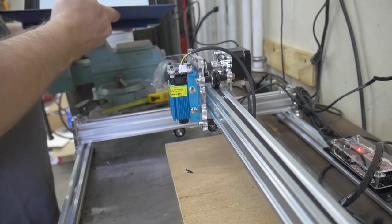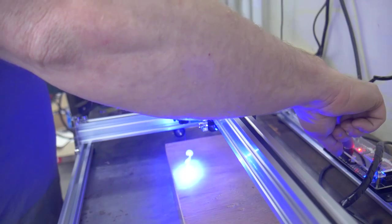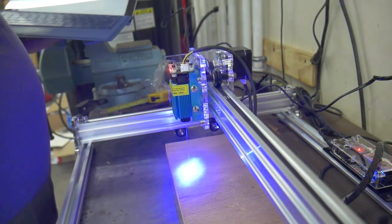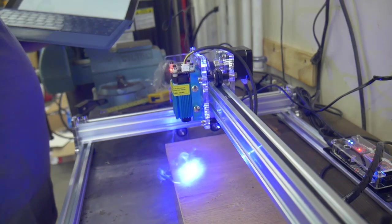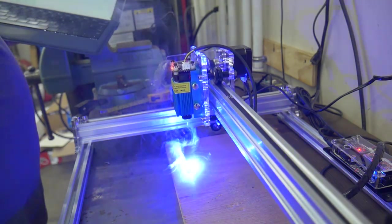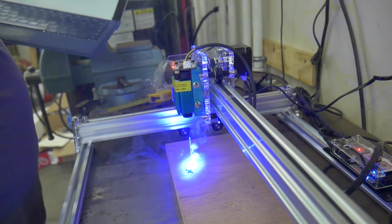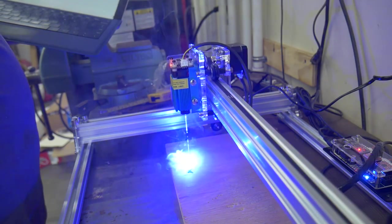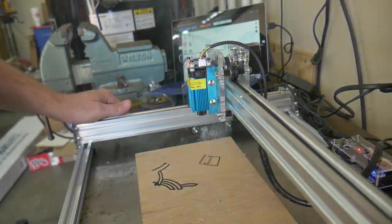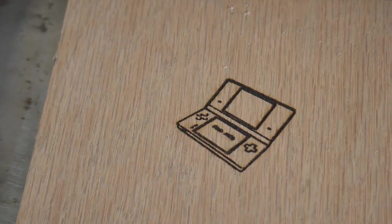I spent some time getting familiar with the LXCAM software, and once I felt ready I decided to load and execute one of the files provided with the software. The process of laser engraving generates a lot of smoke, especially on wood, so be sure to use the laser in a well-ventilated area. It became apparent that this file was much bigger than I was expecting, so I stopped the program and looked for something a bit smaller. I settled for this small engraving of a Nintendo DS. As you can see, it did a good job engraving on a scrap of oak plywood.